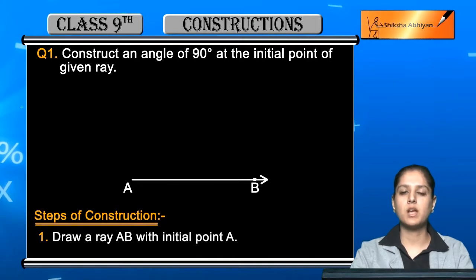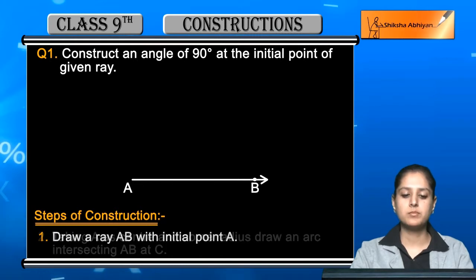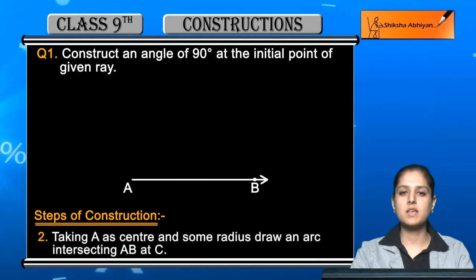Ab this initial point ki upar aapko a 90 degree ka angle construct karna hai. So second step hai: taking A as center and some radius, draw an arc intersecting AB at C.